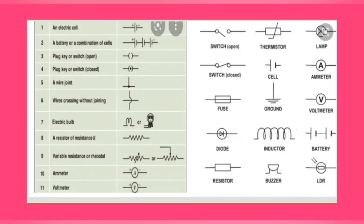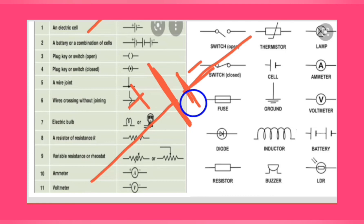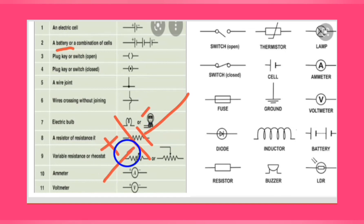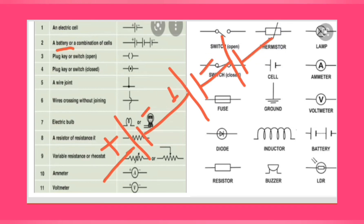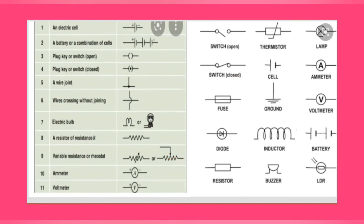Now let us look at the circuit symbols used in the entire electricity chapter. An electric cell is represented by a long line (positive) and a short line (negative) with a small gap. A battery is many cells connected in series — alternating long and short lines. A plug key or switch: open switch is shown as an open gap; a closed switch has a dot inside. A wire joint is marked with a dot, and wire crossing without joining is shown with a small hump.